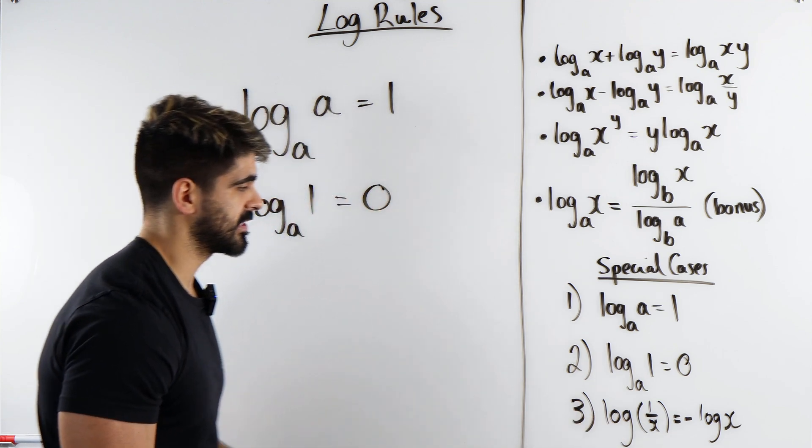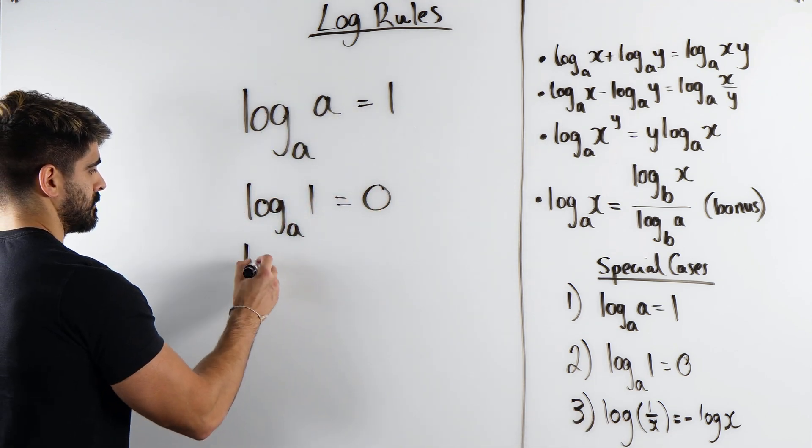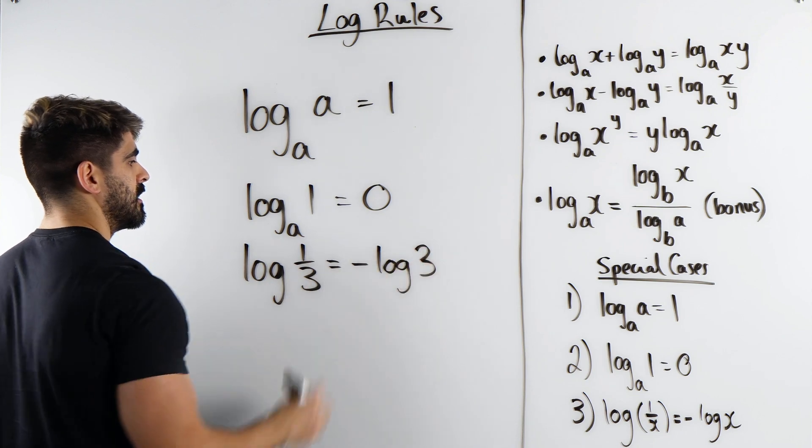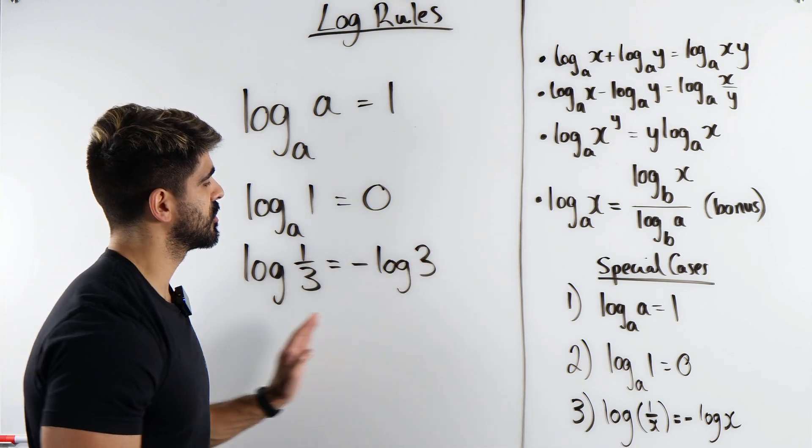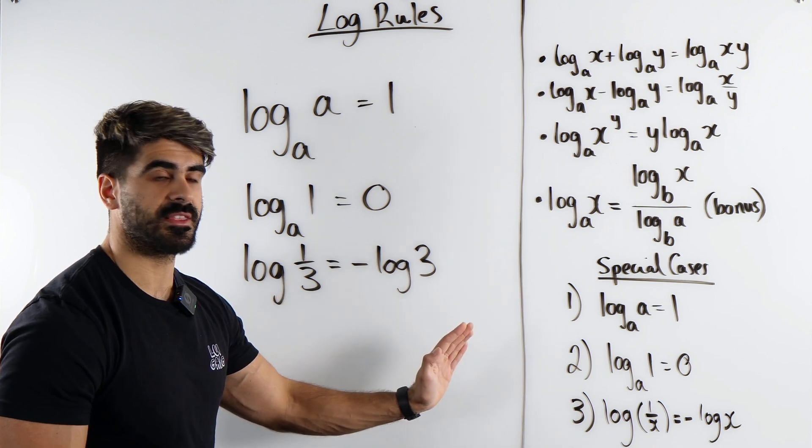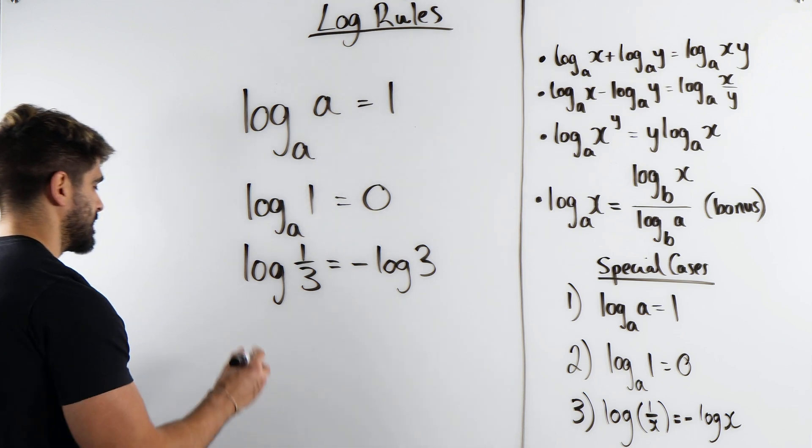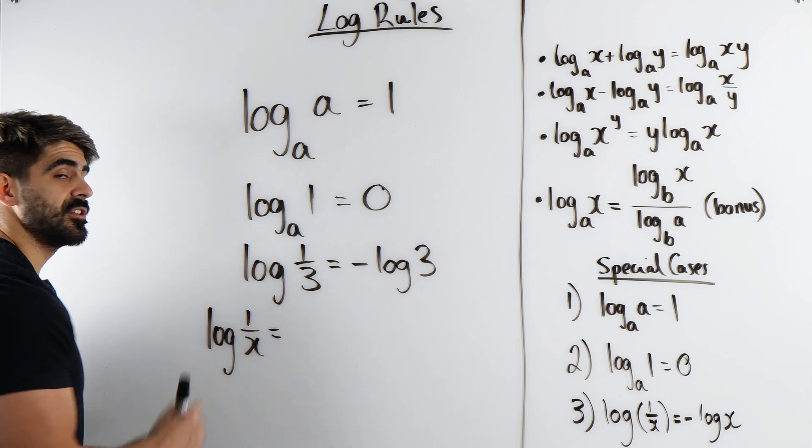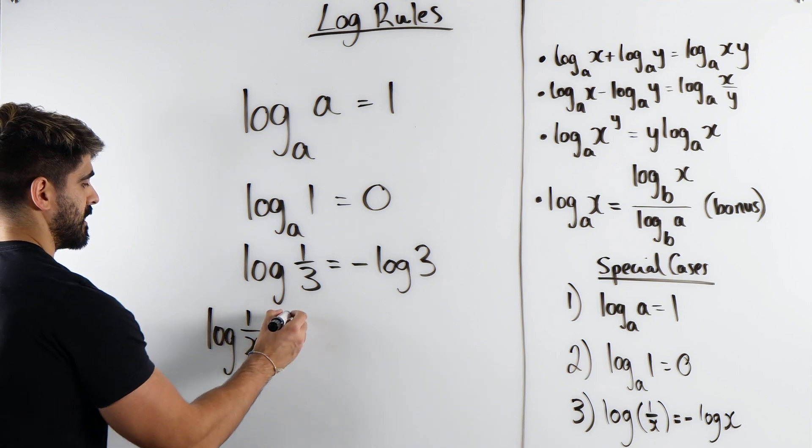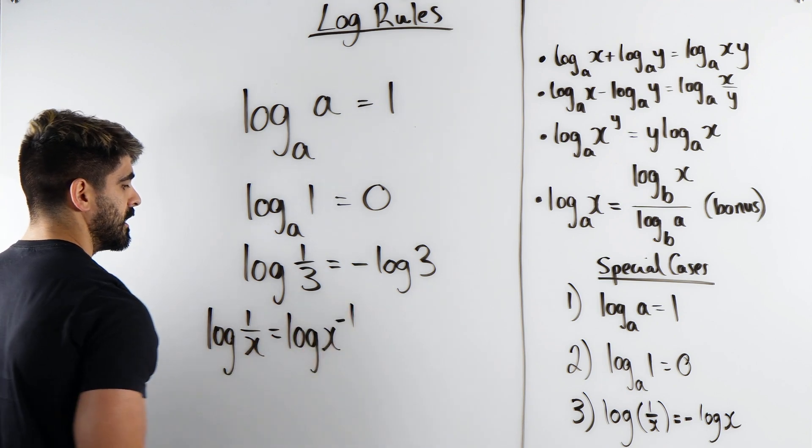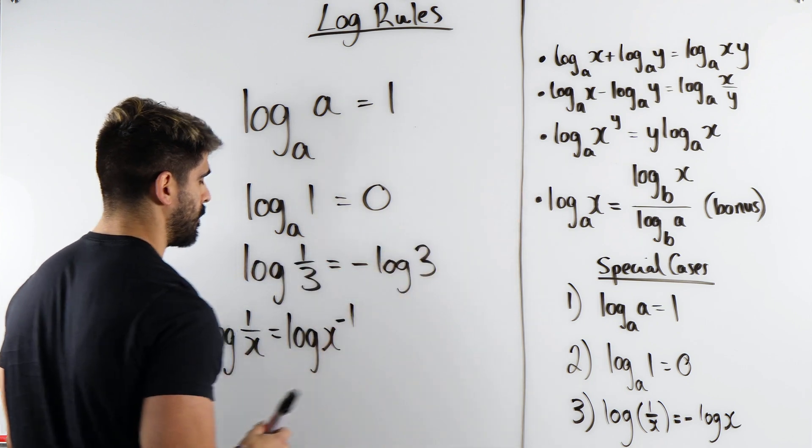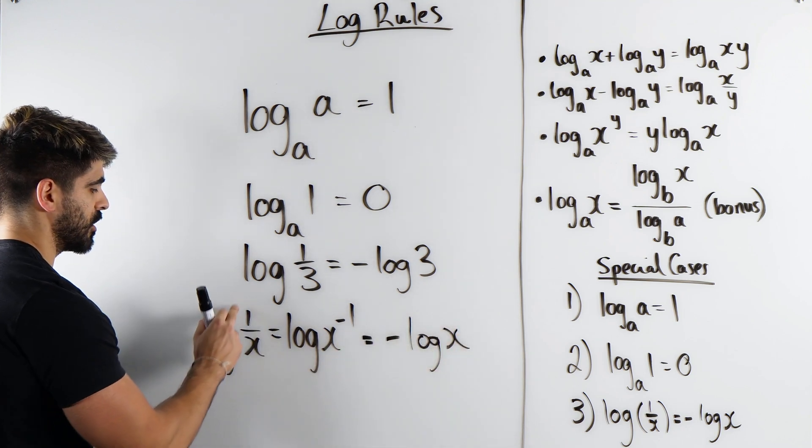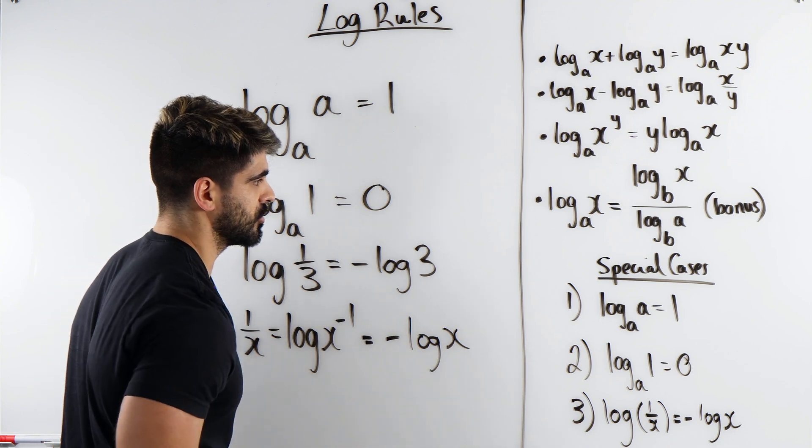This one is a very important one for when we get into year 13. Log of 1 over X is the same as minus log X. For example, log of 1 third is minus log 3. Now this is something that in year 13 when we do differential equations and all that stuff, we would just need to write this. Why is this the case? If I have log of 1 over X, I can rewrite this as X to the power of minus 1. Then using our favorite power rule, we can bring down that negative. Log of 1 over X is minus log X. Please do not forget that one.